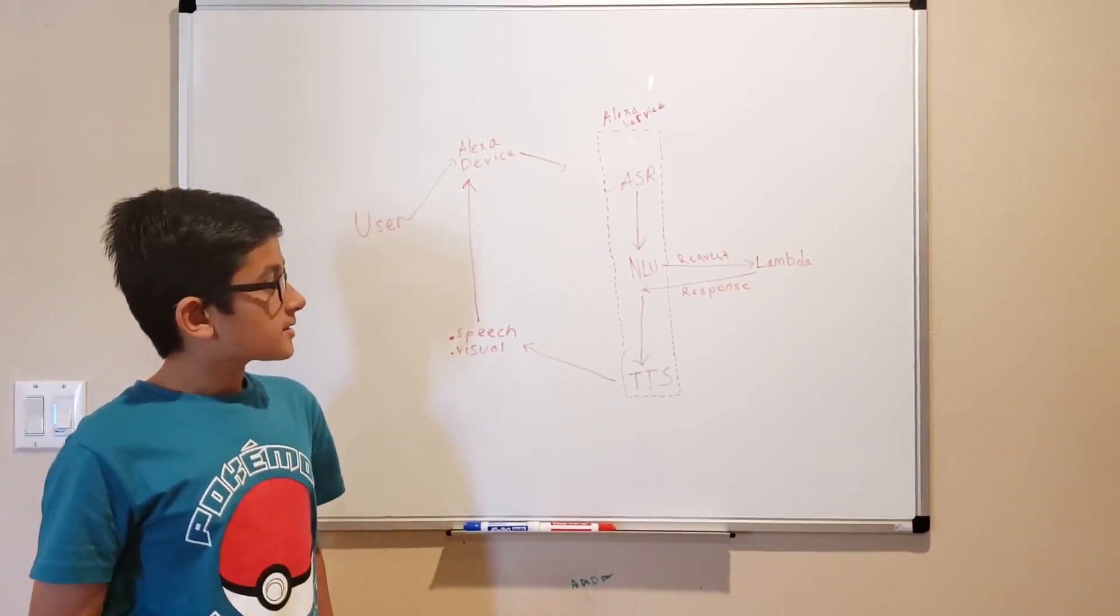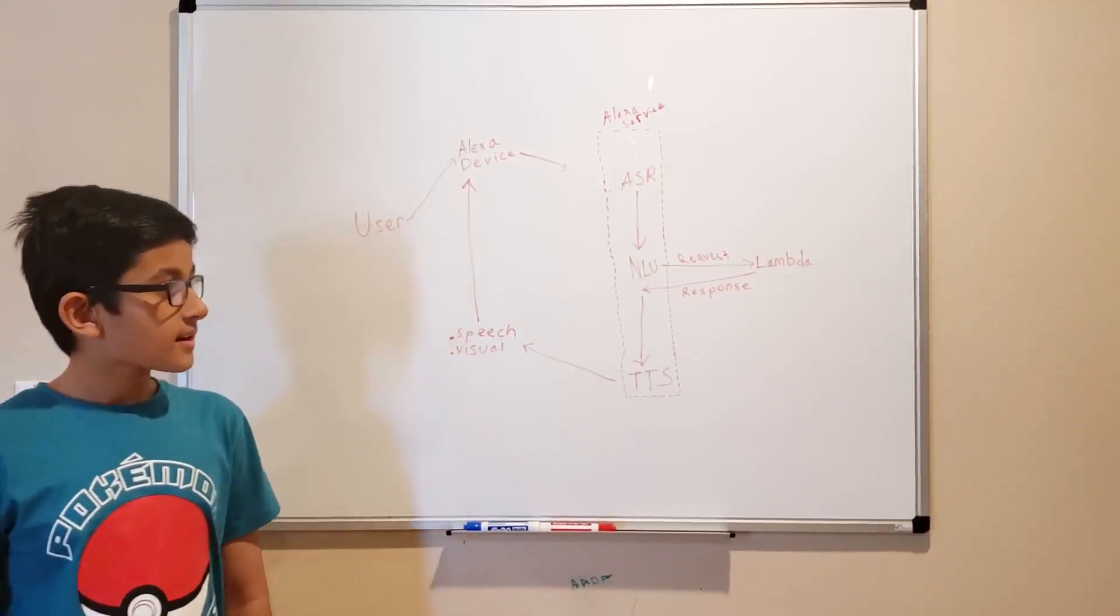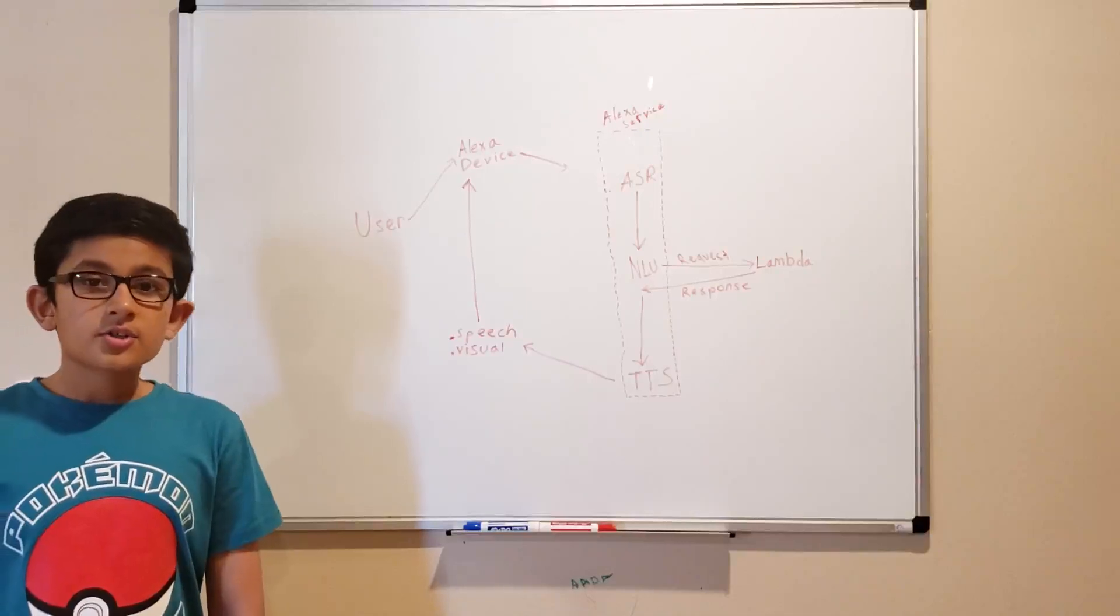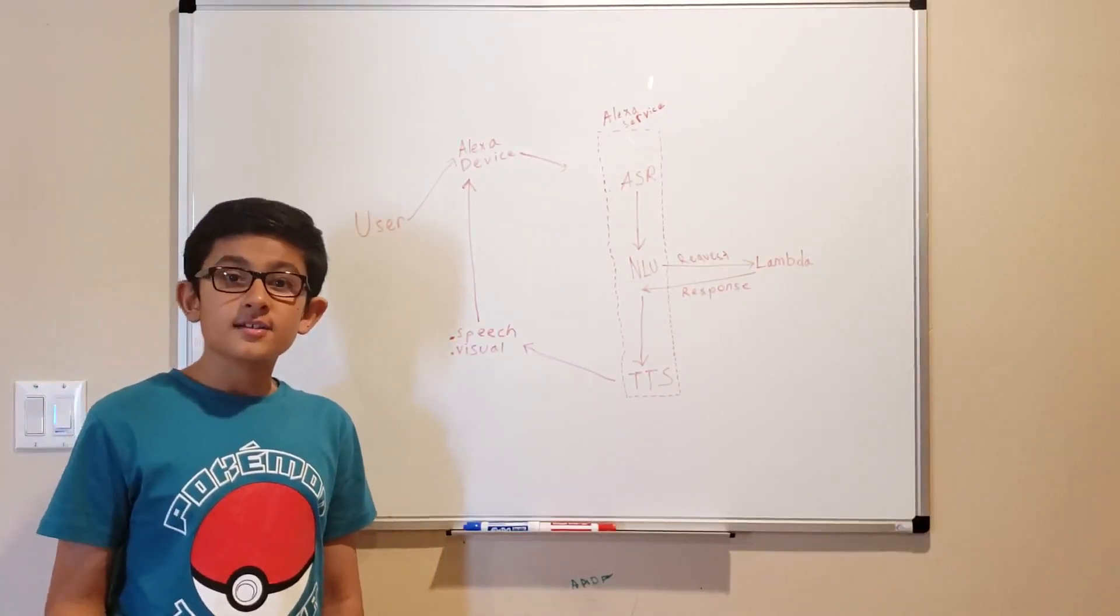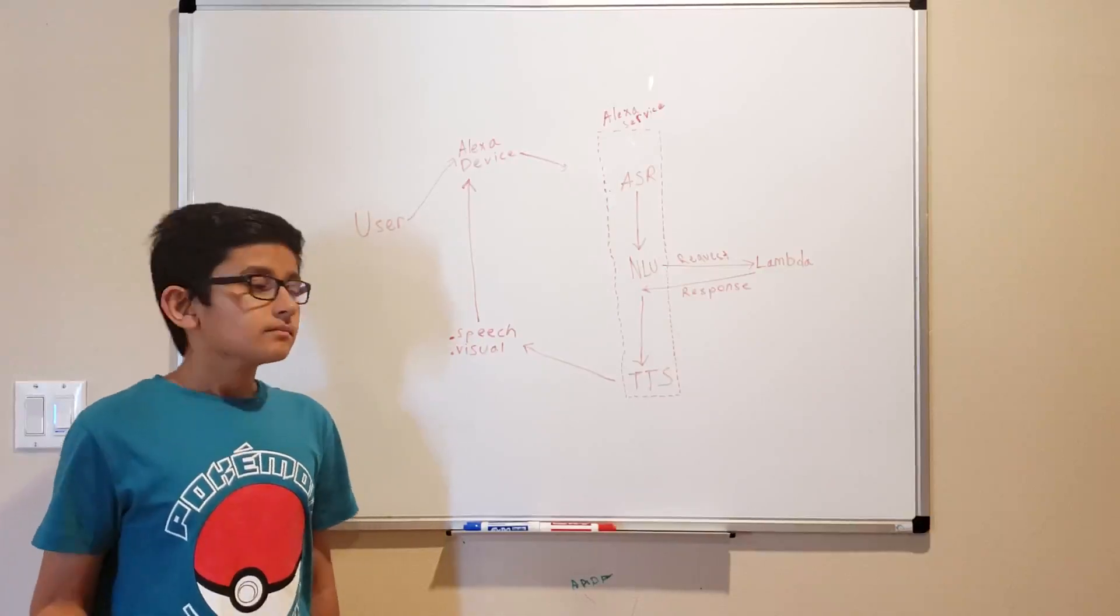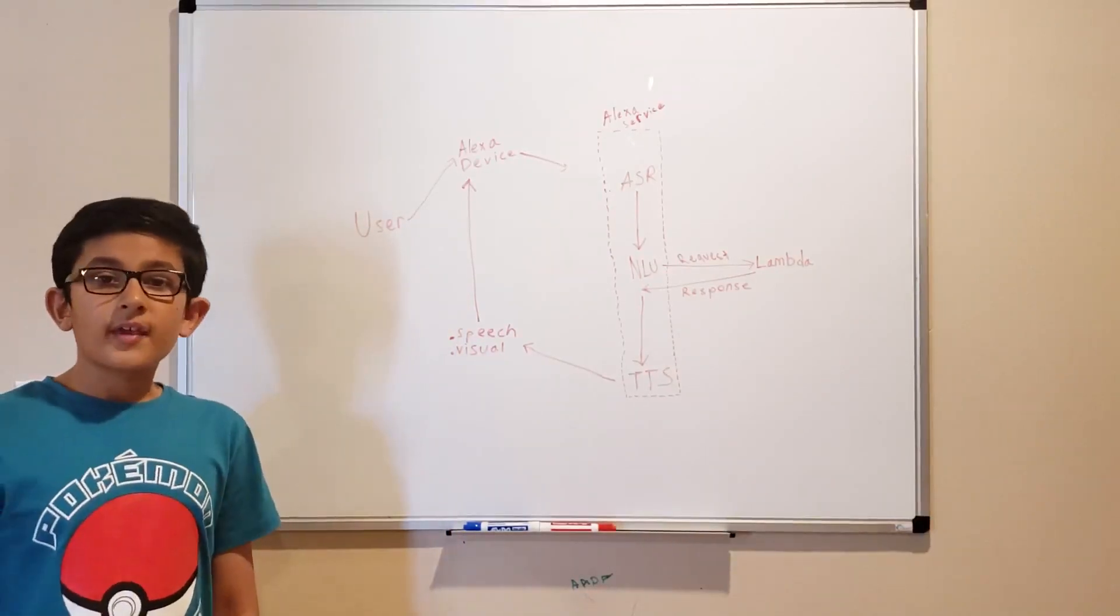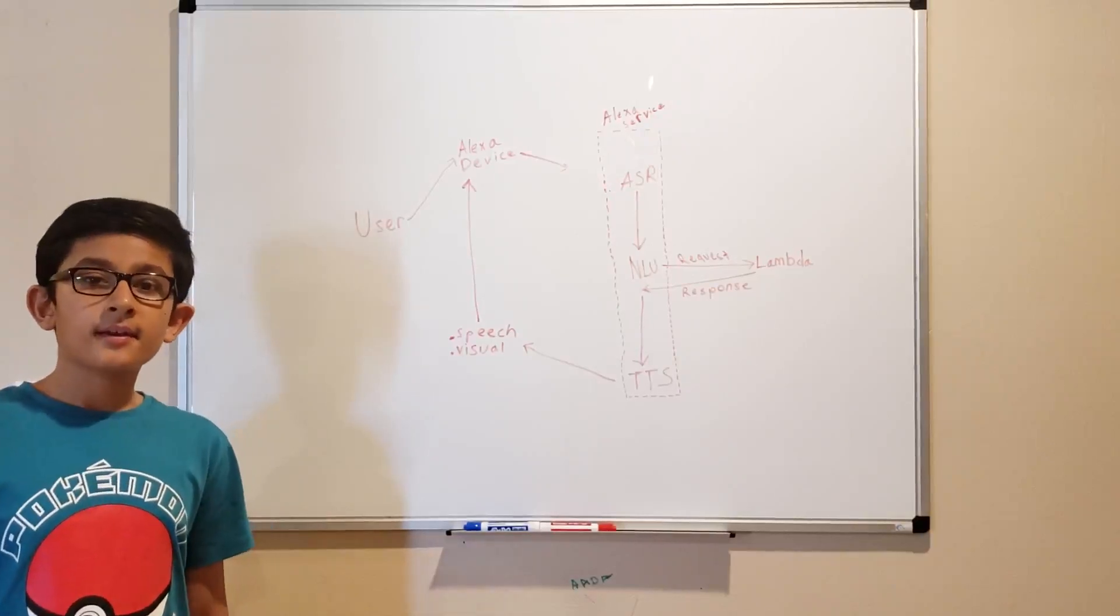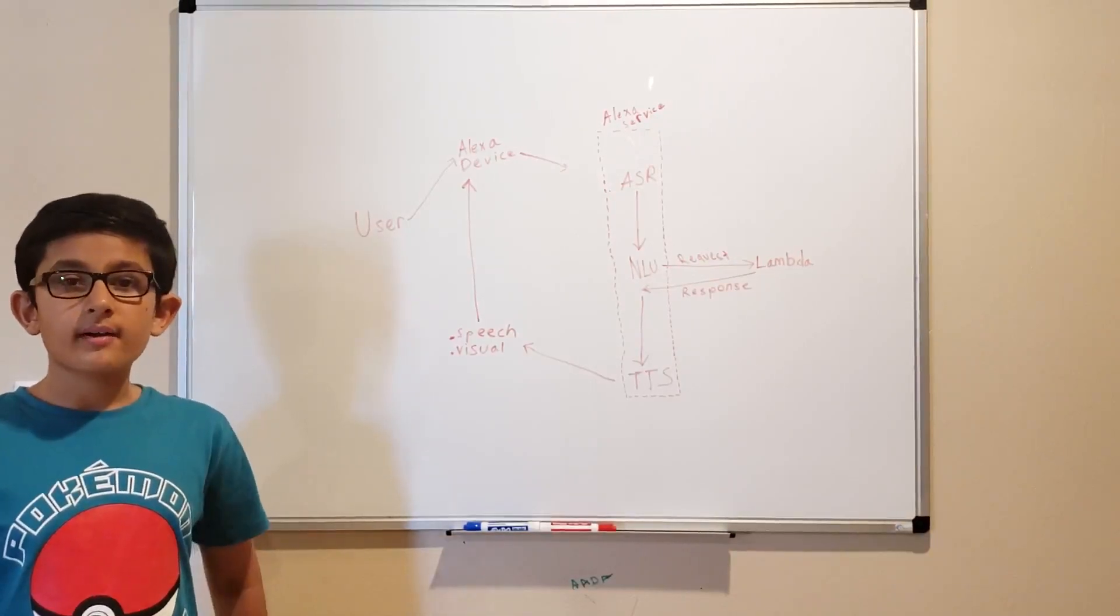So then NLU sends a request containing the intent to your Lambda function. The Lambda function should have a handler for that intent. And then it will send a response back to the Alexa service, depending on what logic you have.